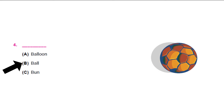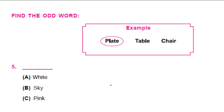All correct. Very good — it was easy peasy. Now we'll head to finding the odd one. Look at this example: there is a plate, table, chair. Which is the odd one? It is plate, because table and chair both have four legs but not the plate. So use your logic and find the odd one in the given questions. Let's start.